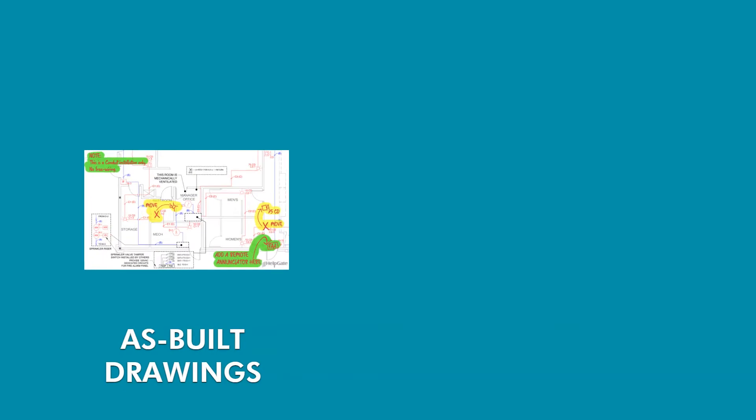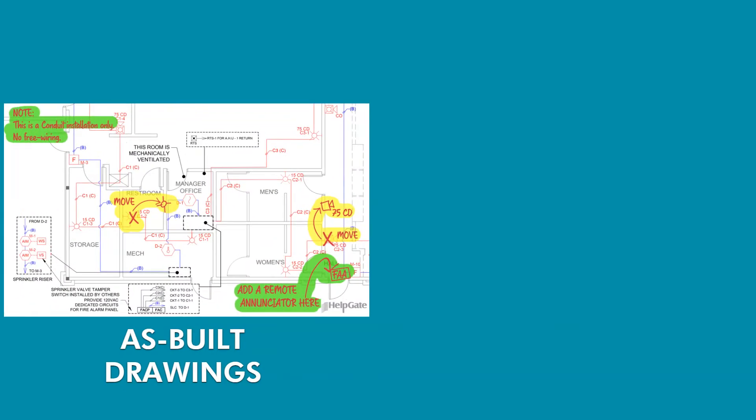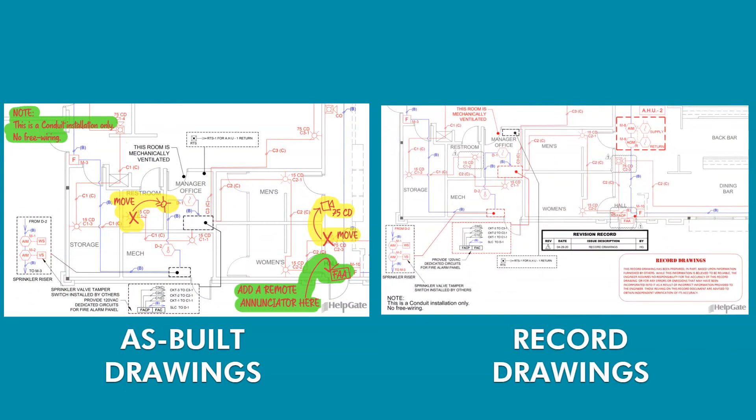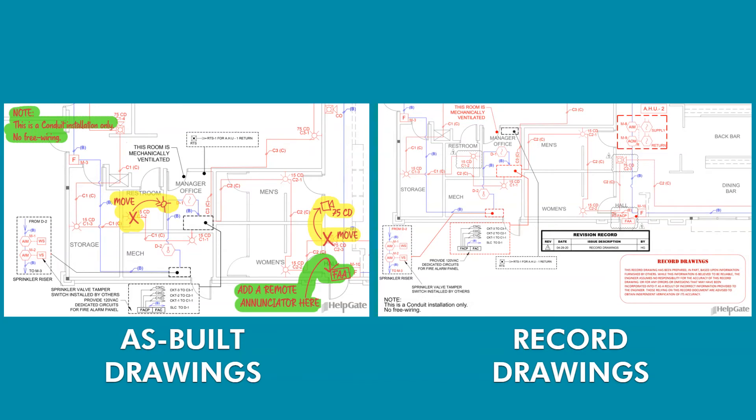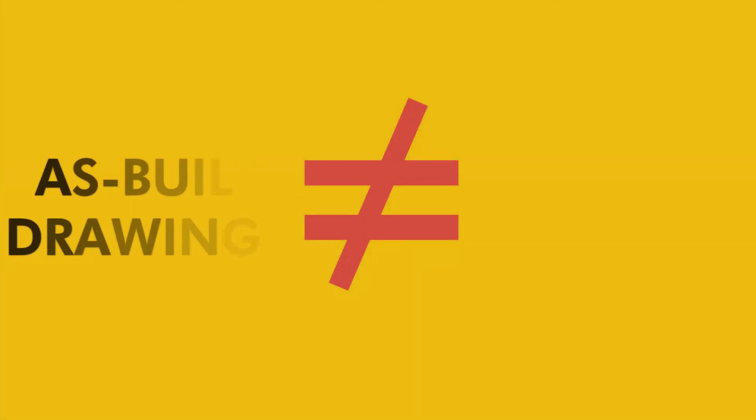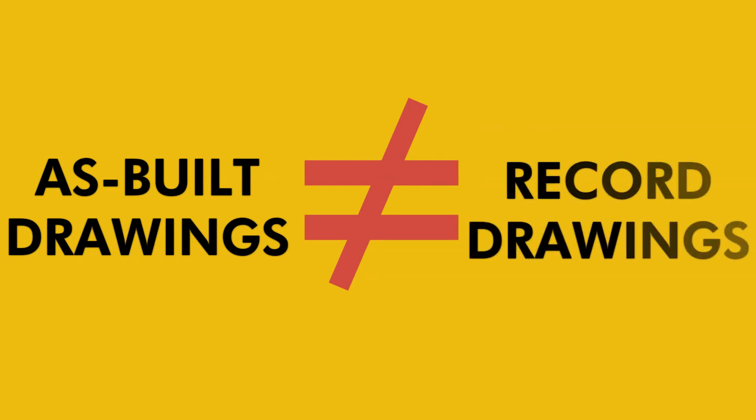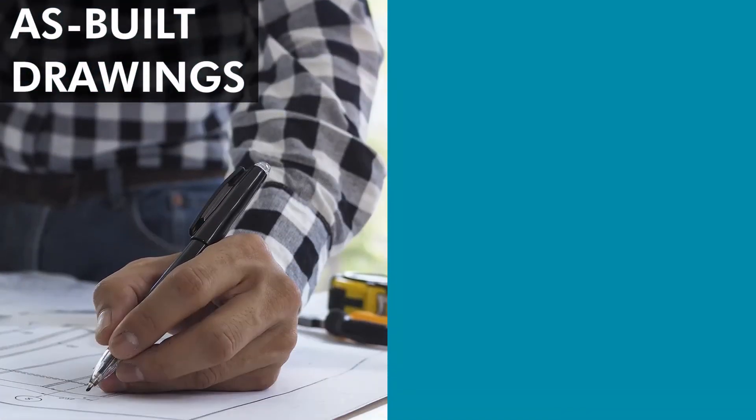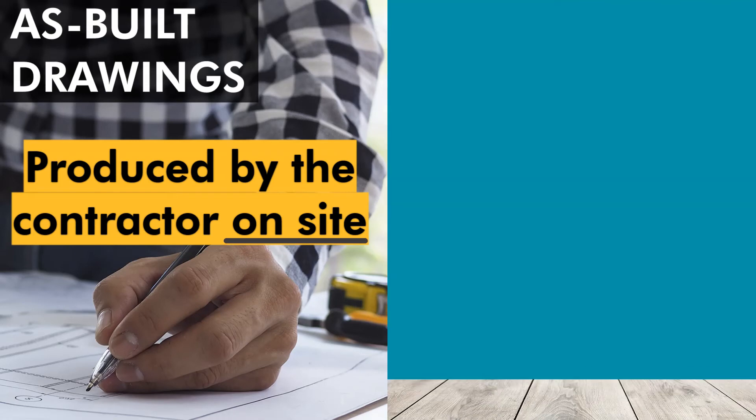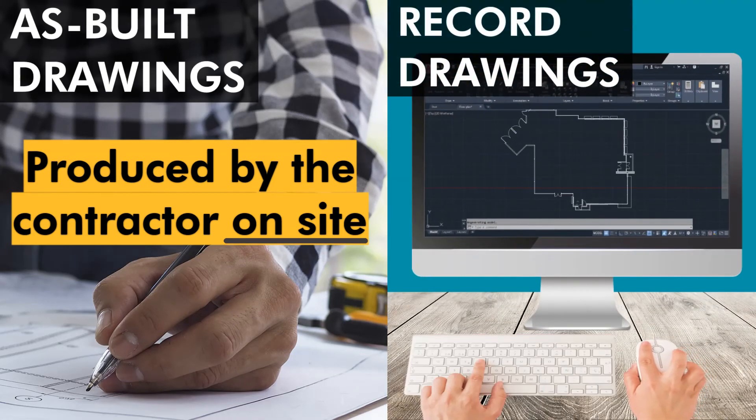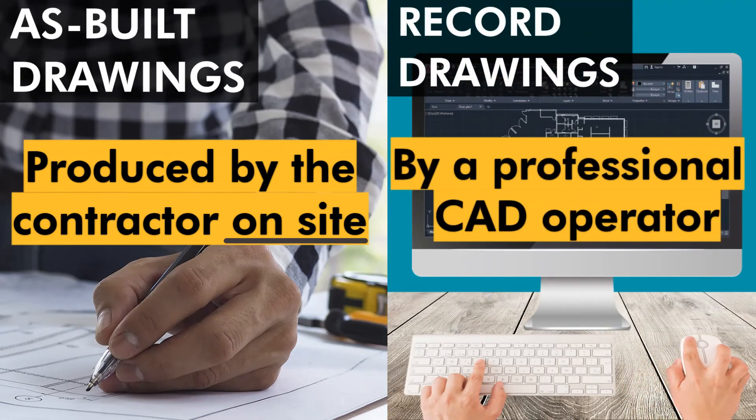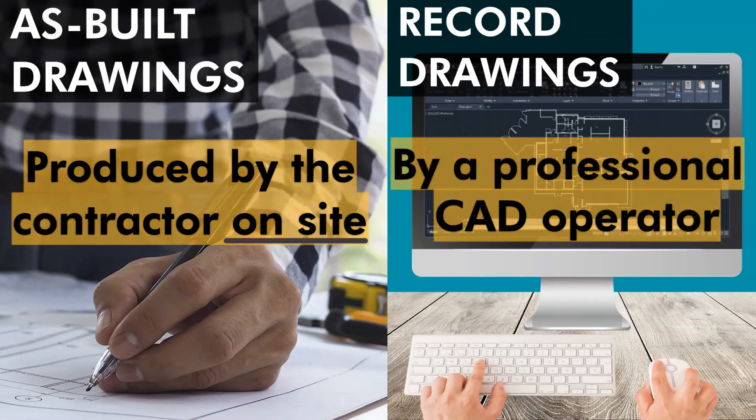Many people use the term as-built drawings when referring to what are actually record drawings, and even vice versa. But the truth is that they are different. The term as-built drawings should not be mistaken with record drawings. As-built drawings are hand-produced by the contractor on site, but record drawings are edited by a CAD operator using professional CAD software after all changes are complete on site.